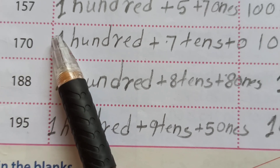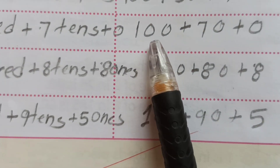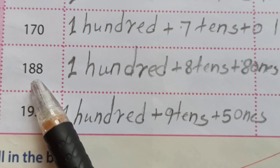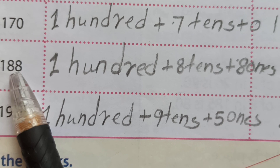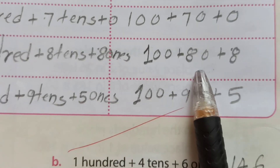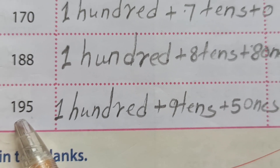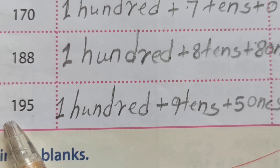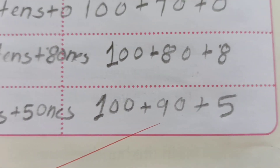Next, 188 — how we expand this number: 1 hundred, 8 tens, 8 ones — expanded as 100 plus 80 plus 8. Another example: 195 — 1 hundred, 9 tens, 5 ones, so expanded form is 100 plus 90 plus 5. That is how we expand the form.